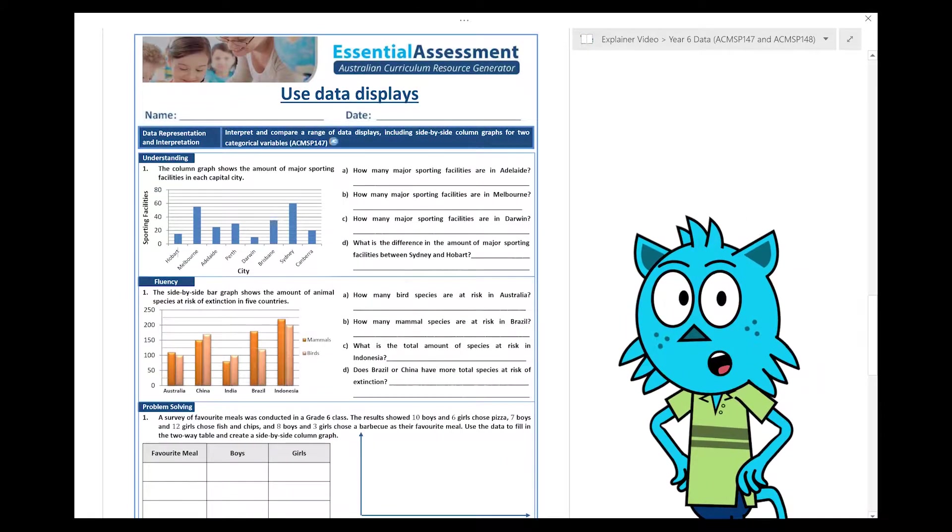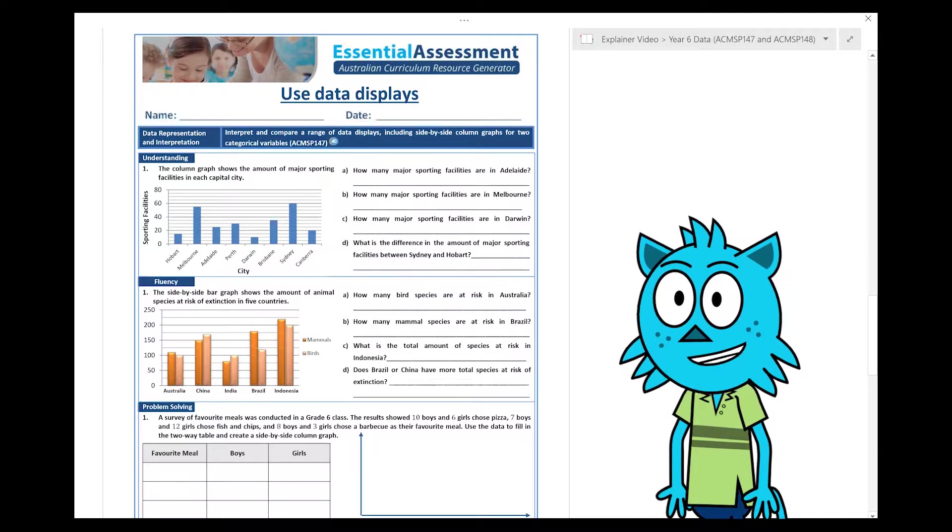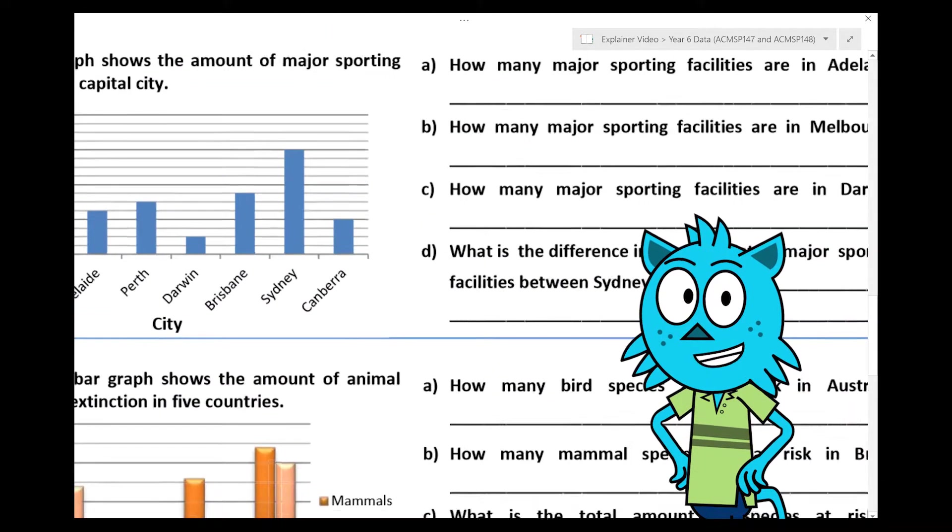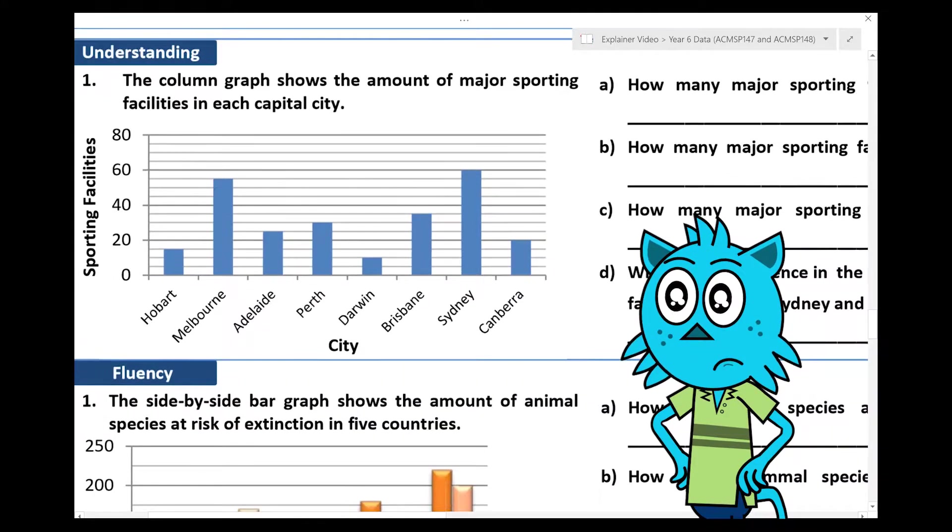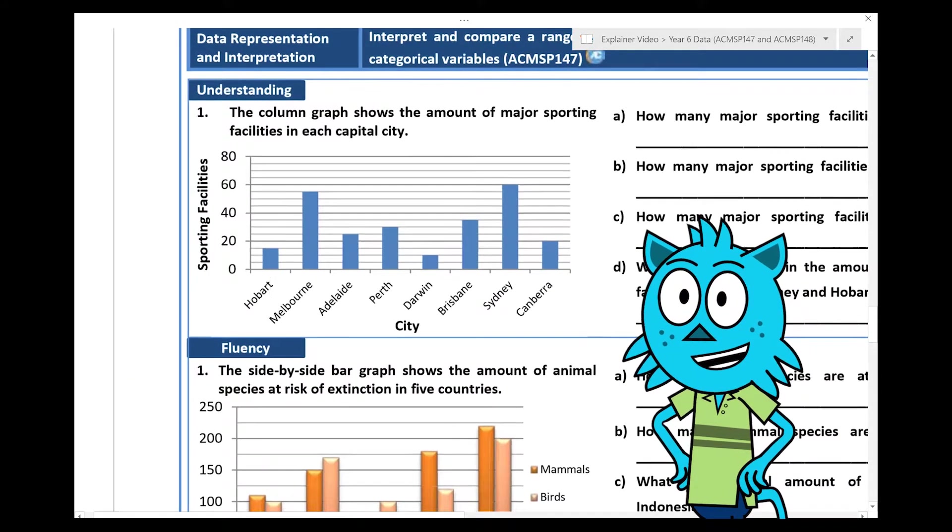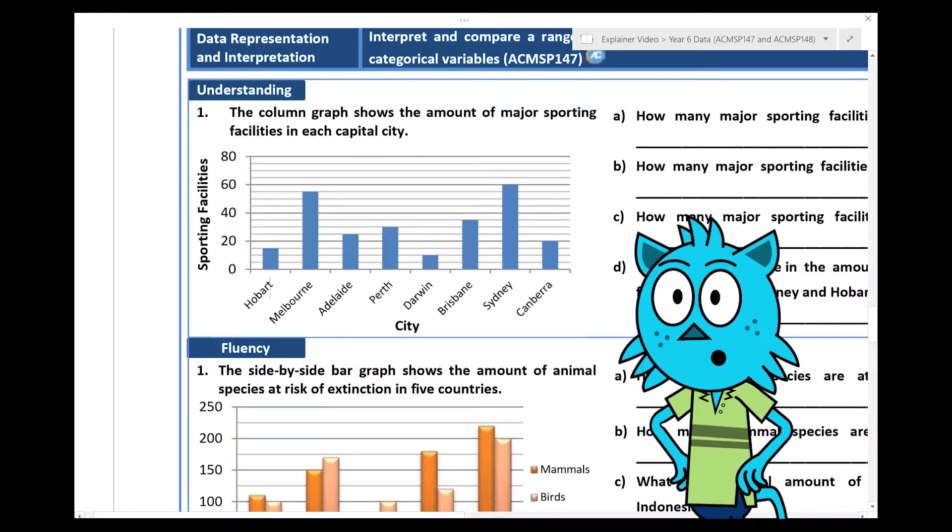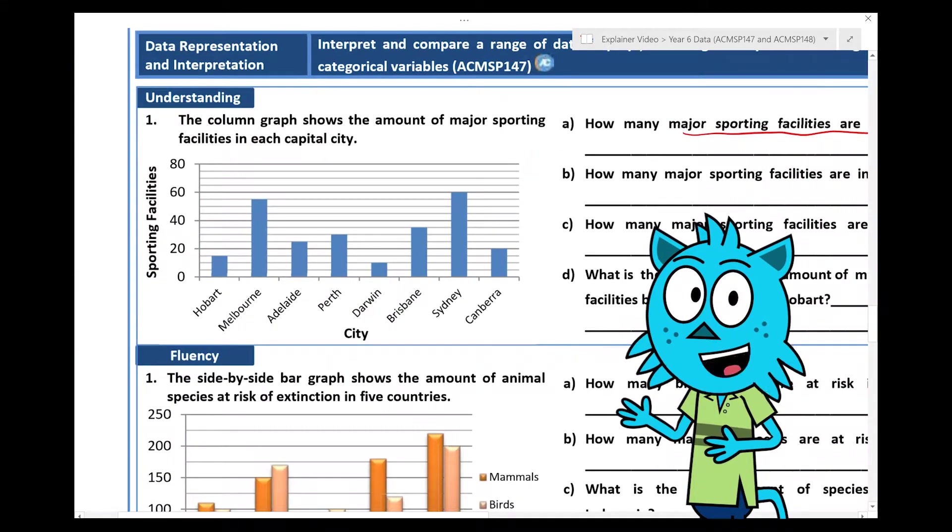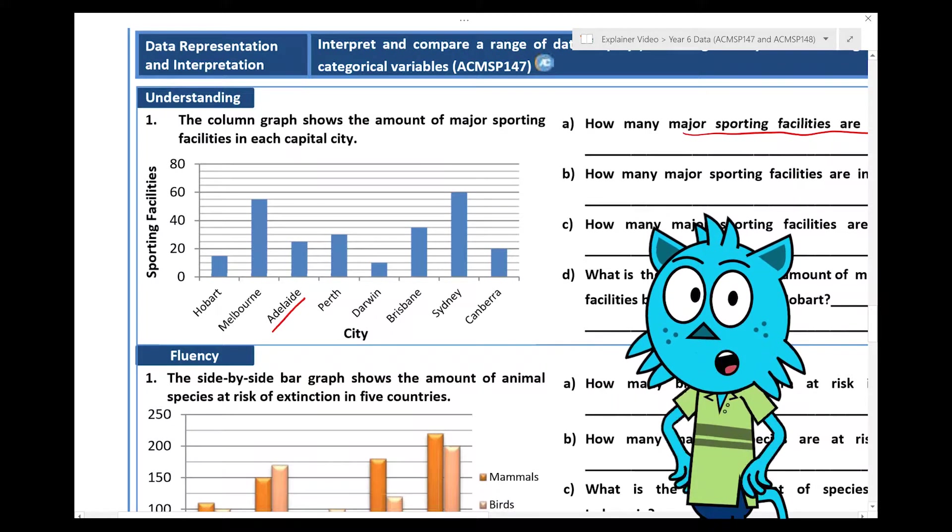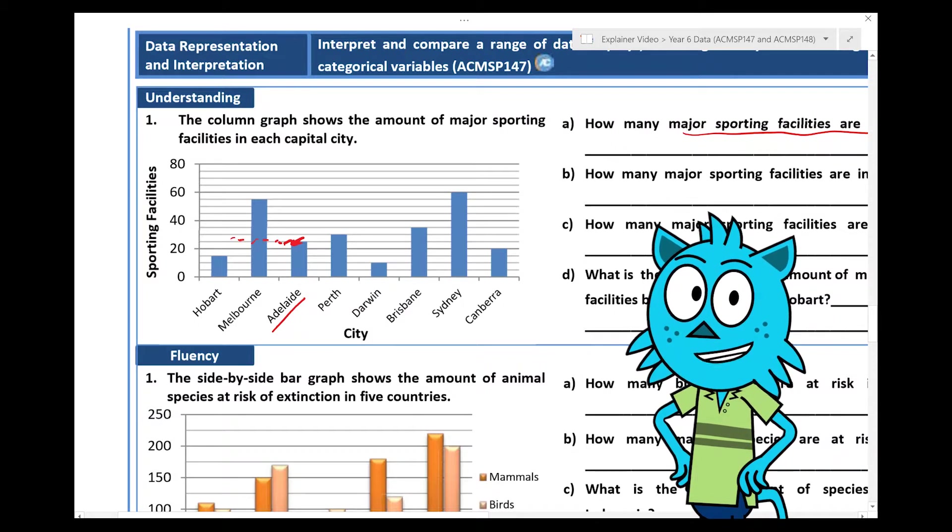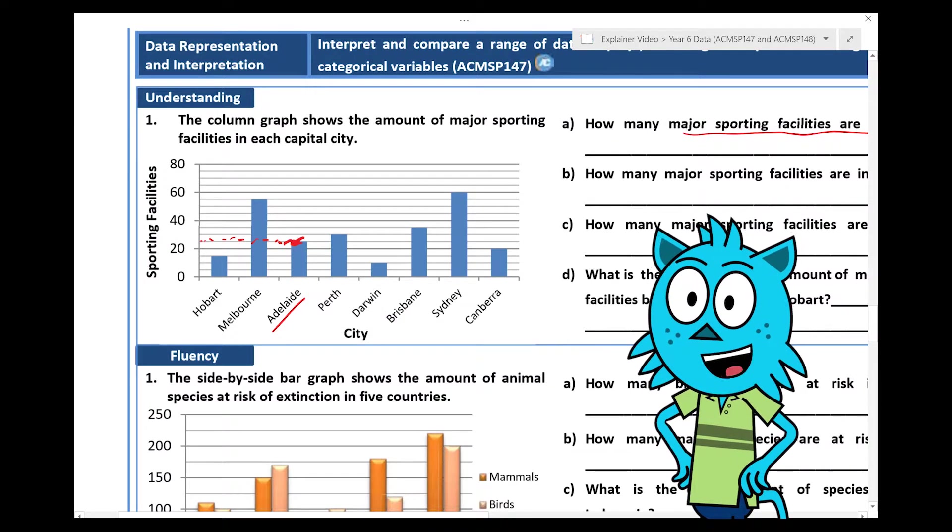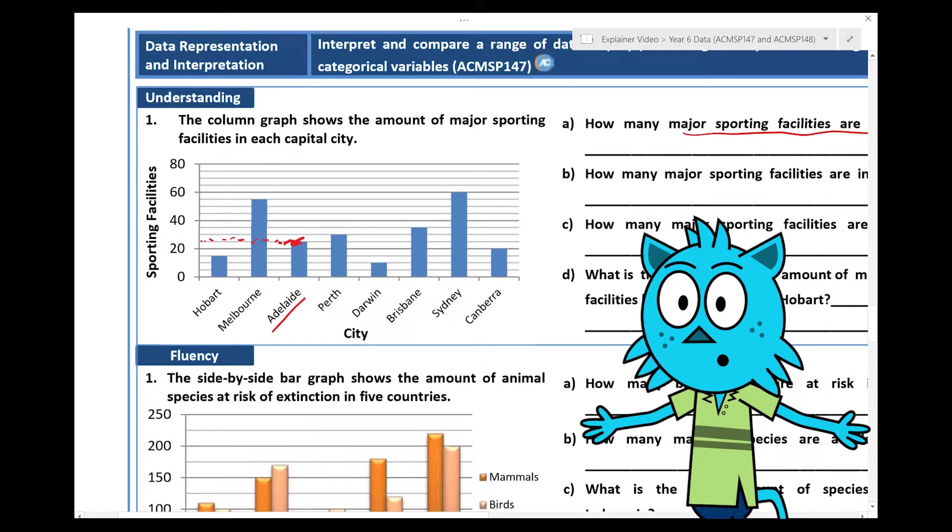So now let's use an example. So in your maths work, you might have a question such as interpreting or comparing some information in a graph. So here I've got a bar graph and if I'm using it on a computer, it's really helpful if I can zoom it in. But if you've got it as a worksheet or as a book, you just have to maybe squint your eyes and have a real good look. So if I was asked the question, how many major supporting facilities are there in Adelaide? I look at my graph and I can find Adelaide here and then go up and see where the line is. Now it's really important to then know what is each one of these lines representing. So I can see it goes from 0 to 20 to 40 to 60 to 80. So it's very important for me to work out what is it counting by. So I could use my maths and just say, well, I can see there's 1, 2, 3, 4 between each one.